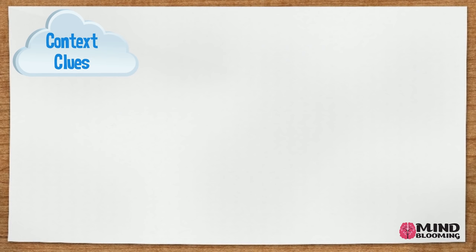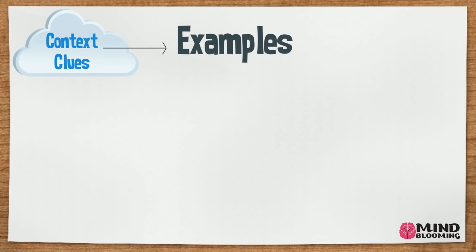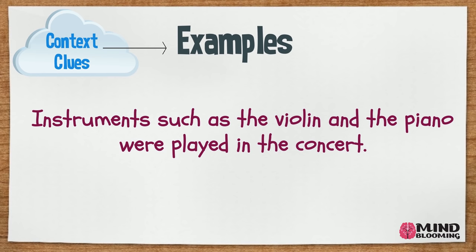Now let's see how examples in a sentence could be clues to the meaning of a word that I don't know. Instruments such as the violin and the piano were played in the concert. If I didn't know what instrument means, I would look at the examples in the sentence to give me a clue. When I read the words violin and piano, I can guess that instruments are tools that make sounds.